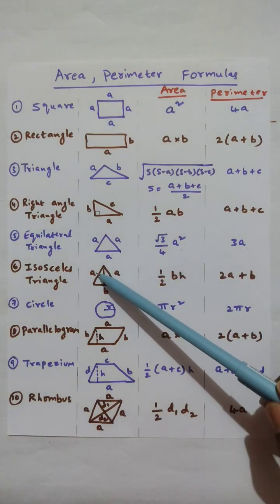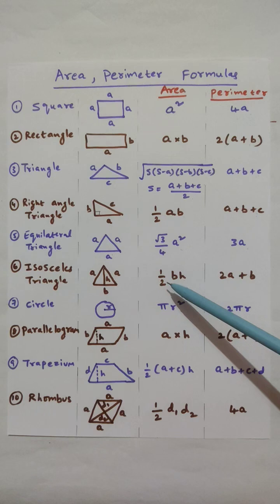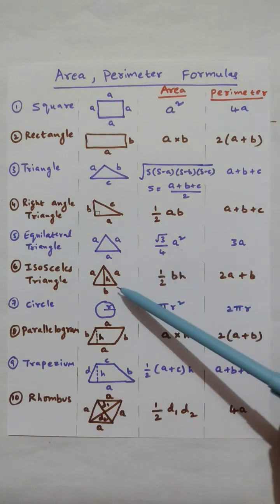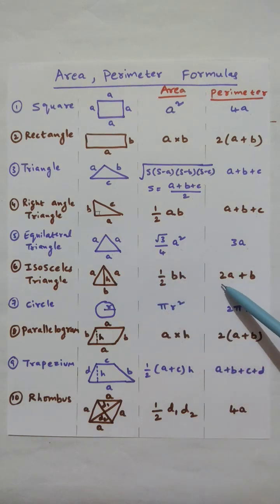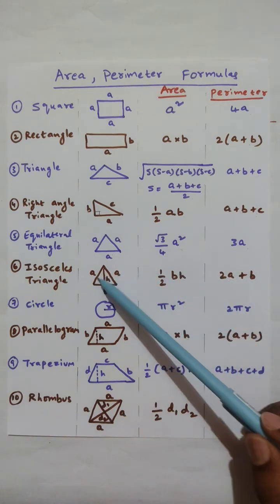Isosceles triangle where 2 sides are equal in length and third side is not equal in length. Area is half into base into height. Perimeter is 2 into A plus B, where A is the side having equal in length.